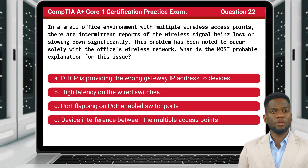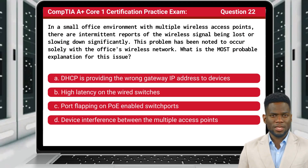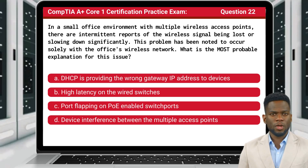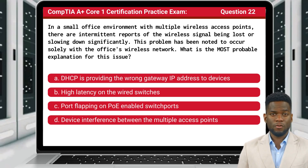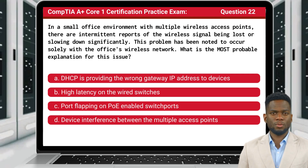Question 22. In a small office environment with multiple wireless access points, there are intermittent reports of the wireless signal being lost or slowing down significantly. This problem has been noted to occur solely with the office's wireless network. What is the most probable explanation for this issue?